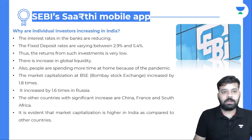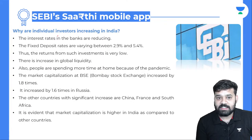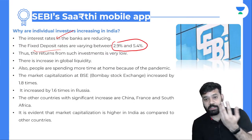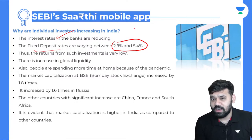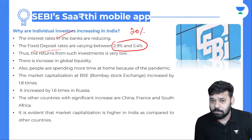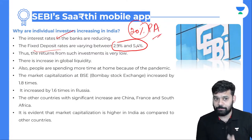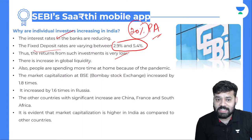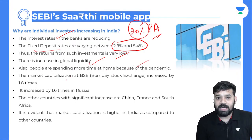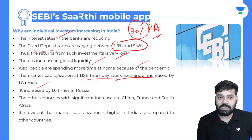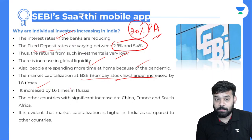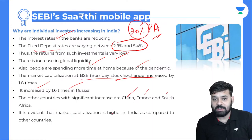Why are individual investors increasing? Interest rates in banks are reducing, and fixed deposit rates vary between 2.92% and 5.4%, which is very low. Thus returns from such investments are very low. There is also an increase in global liquidity, and people are spending more time at home due to the pandemic. Market capitalization at BSE has increased by 1.8 times. It increased by 1.6 times in Russia. Other countries with significant increases include China, France, and South Africa — market capitalization is higher in India compared to other countries.